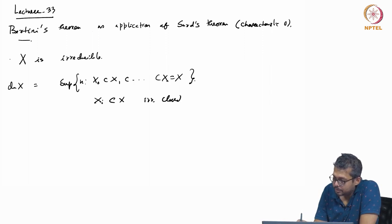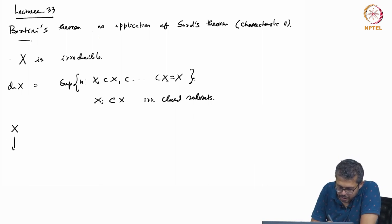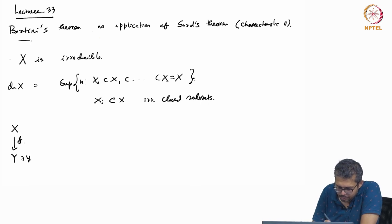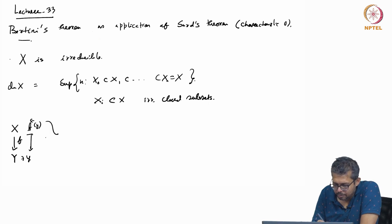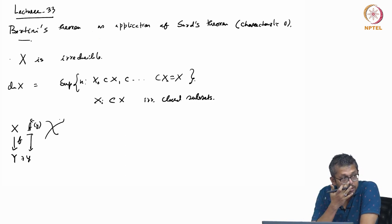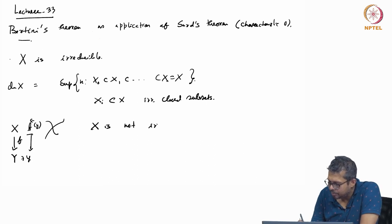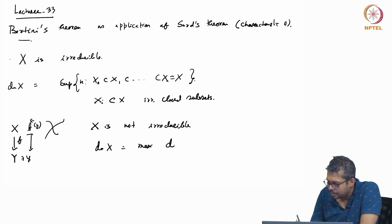Those are irreducible closed subsets. But the thing is you want to be a little bit more general. Suppose X is not irreducible — that appears, for example, when you have a morphism f and take the fiber f inverse of y. This fiber may not be irreducible. So when X is not irreducible, you define dimension of X as the maximum of dimension of x_i, where the x_i's are irreducible components.